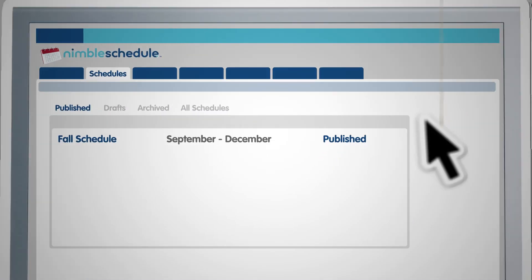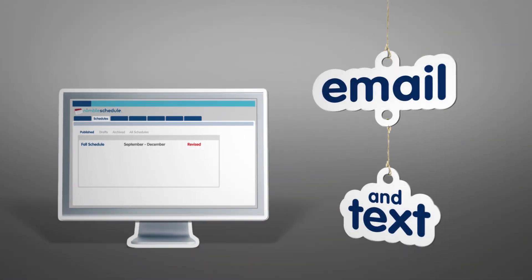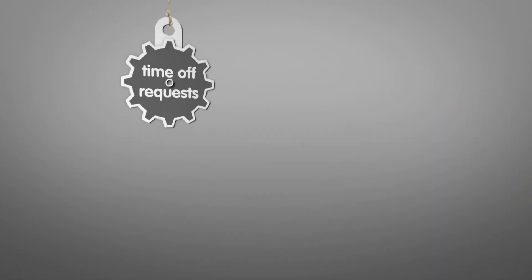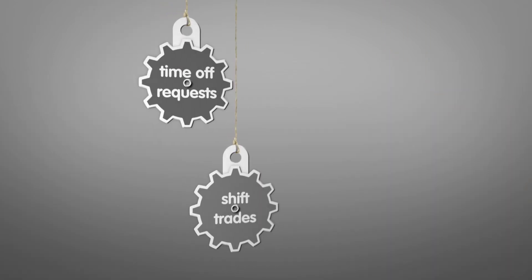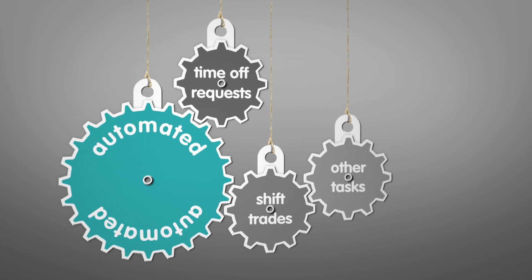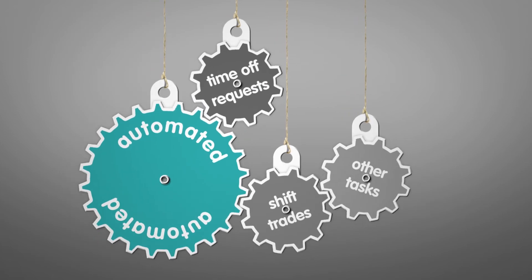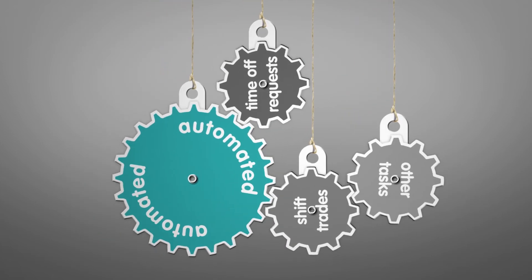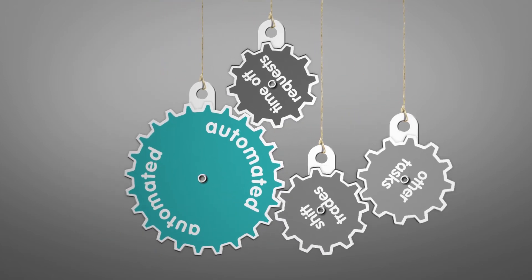And if you update the schedule, your employees are notified immediately via email and text message. Time off requests, shift trades, and other time-consuming tasks are now all automated. You make the final decisions, but your employees do the footwork.